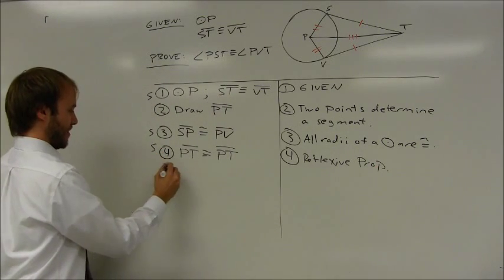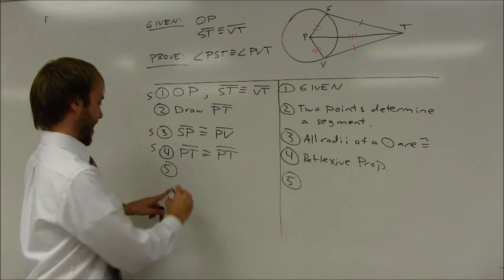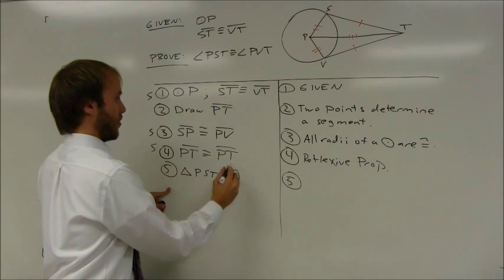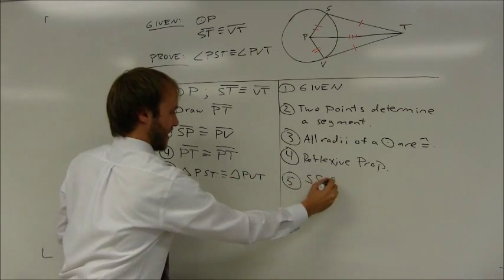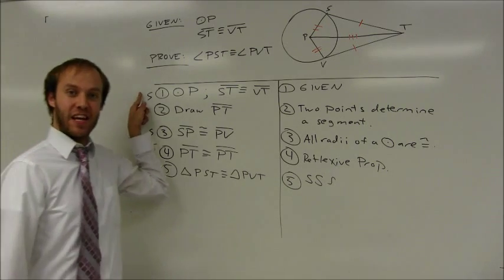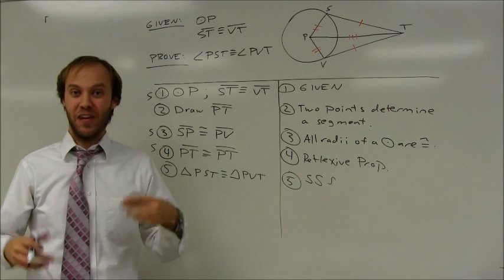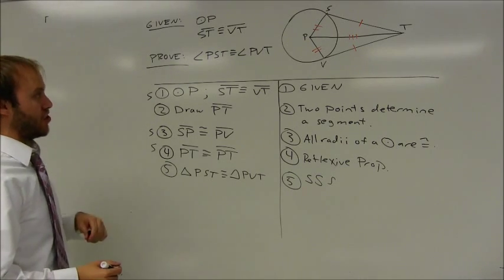That's another pair of sides. My two triangles are going to be congruent by side, side, side. So that's triangle PST congruent to triangle PVT. Side, side, side. Again, make the check. Make sure that you have three congruent statements. If you don't have those three congruent statements, you need to go back and make sure you add those.